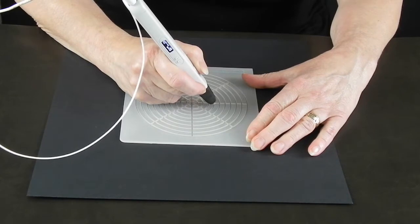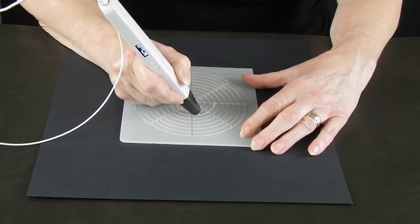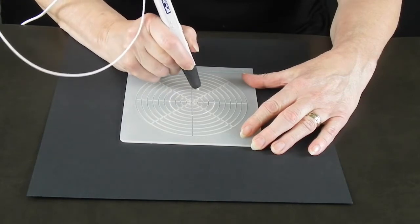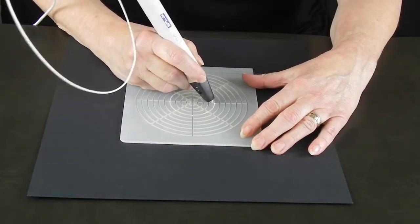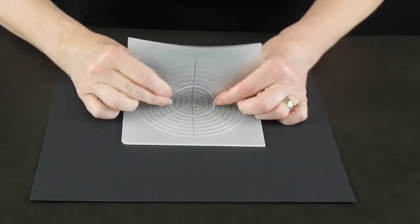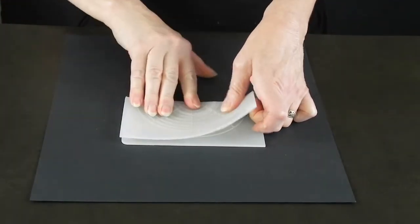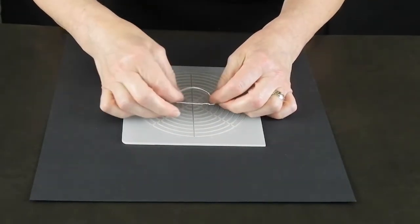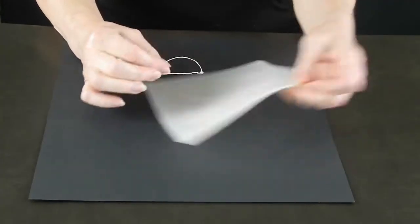The idea of this technique is super simple. Whenever you fold any 2D shape it becomes instantly a 3D shape. Works with everything not just circles. Folding is how you get 3D origami creations from a single flat sheet of paper.